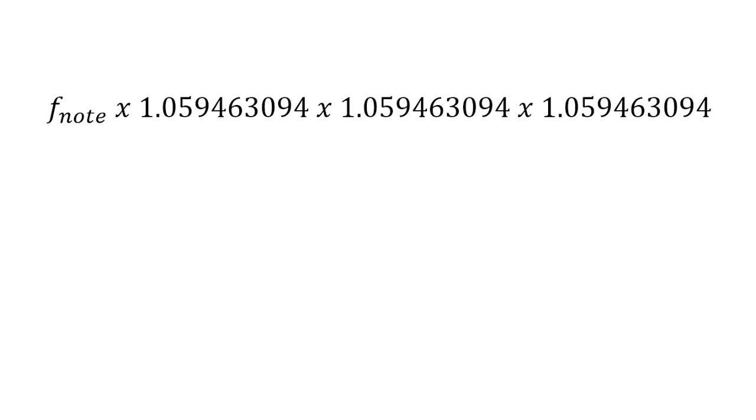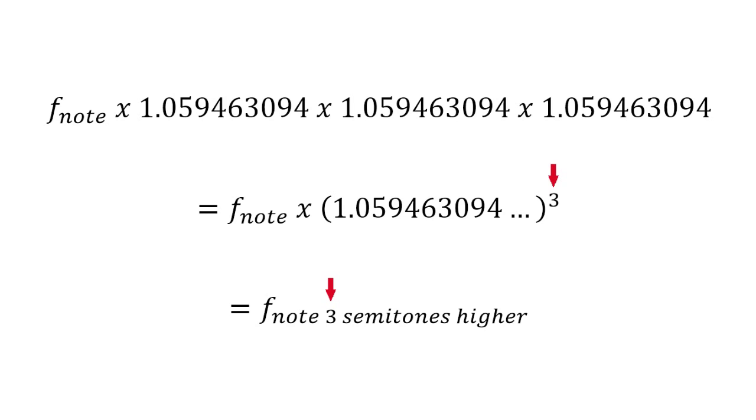If you multiply the frequency of a note by 1.059463094 three times, or that number cubed, you get the frequency of the note three semitones higher.